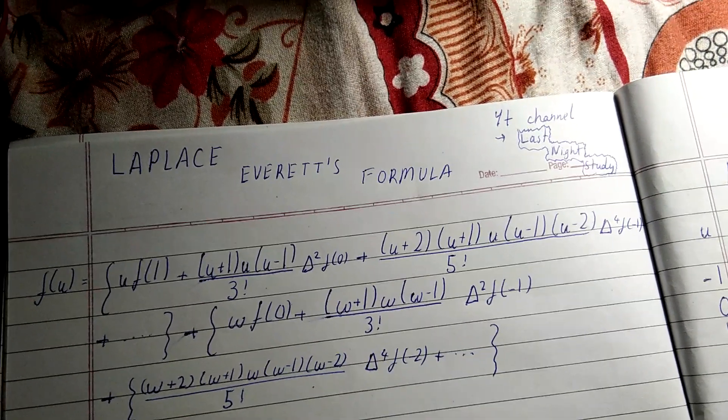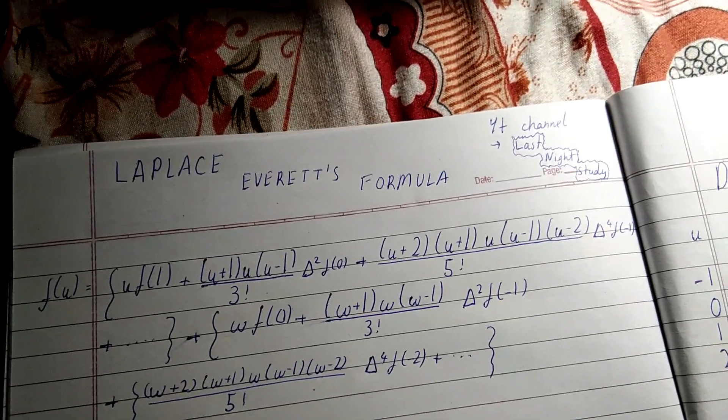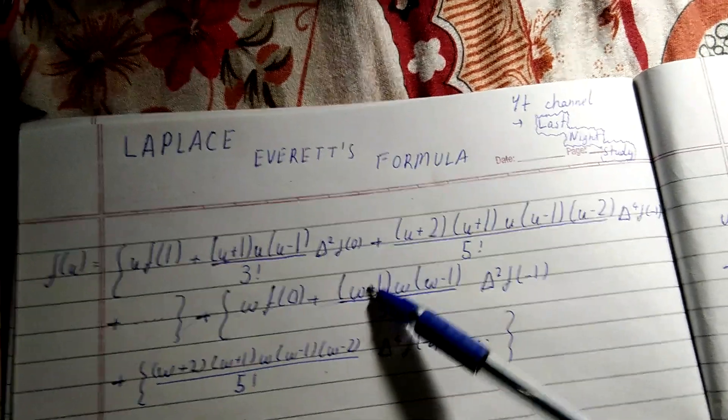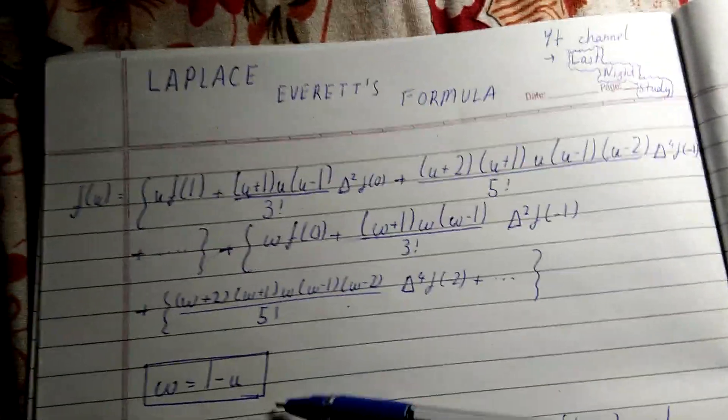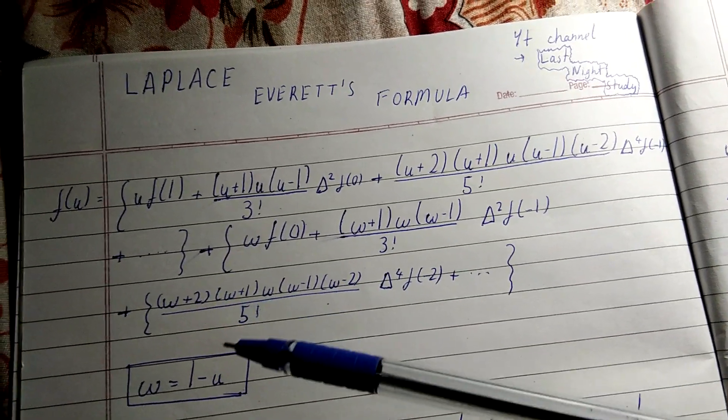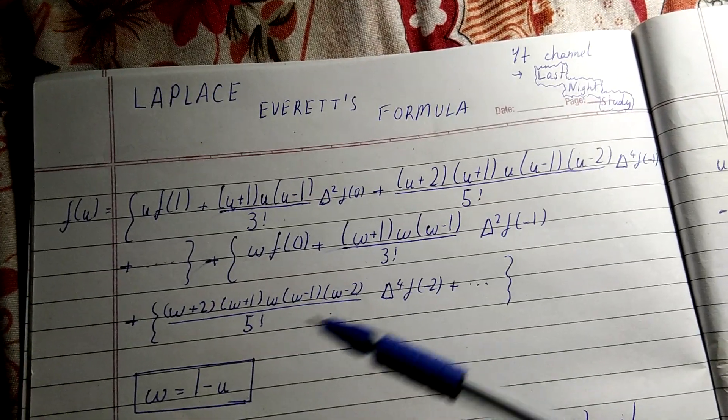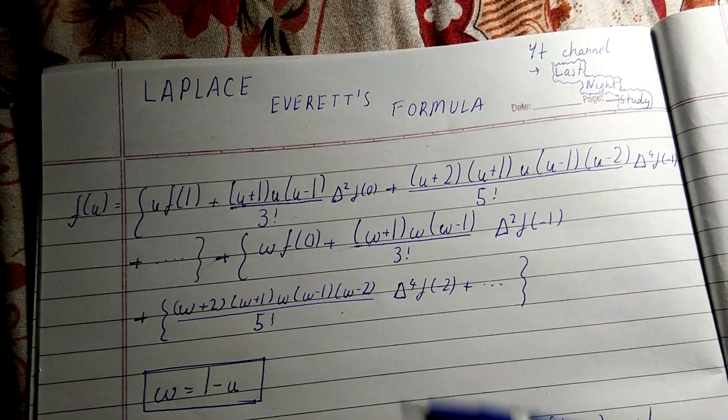W is simply 1 minus u. You are used to finding u, and you can find u very easily if you are comfortable with Newton's forward and backward, or Gauss forward and backward, or even Sterling's or Bessel's. You can find u similarly like that. Now let's come to the numerical part.